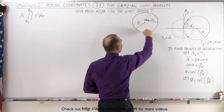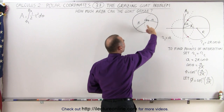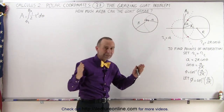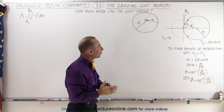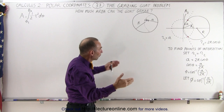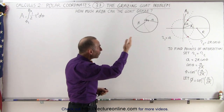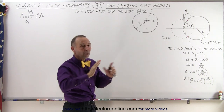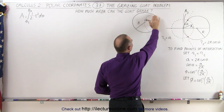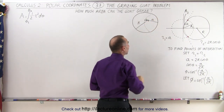The radius of the enclosure is R. Because of the limitation of the string length A, the goat can only reach a certain portion of the total enclosure — it can only graze that portion of the enclosure.